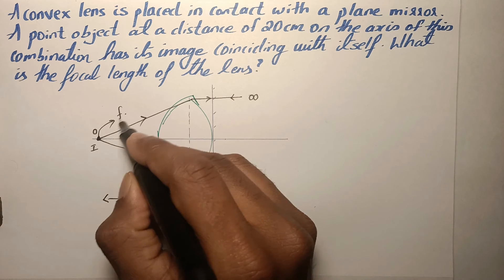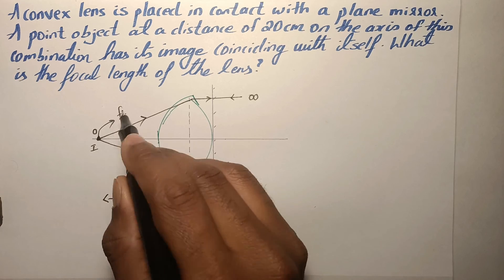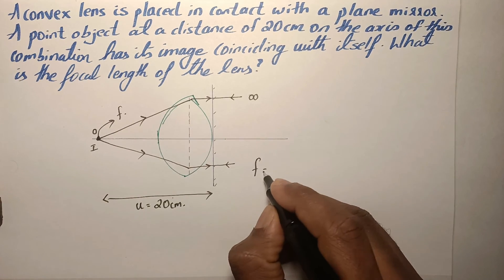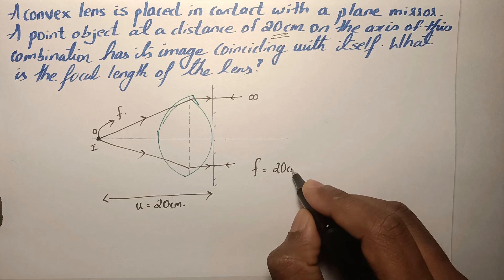So the focal point, the object distance, and the image distance all become the same, which means that the focal length of the given lens is the object distance itself, that is 20 centimeter.